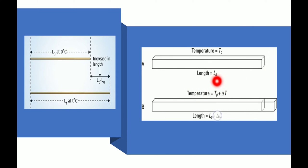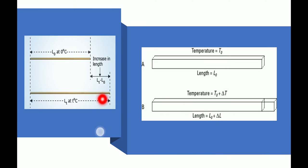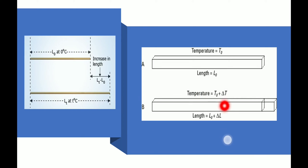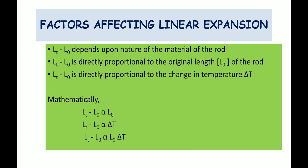In the second picture in the same slide, the initial length L₀ and initial temperature of 0°C are mentioned. On increasing the temperature, the length also increases. This change in length is denoted by ΔL — the triangle symbol represents the sign of difference, meaning L_T minus L₀ can also be written as ΔL. Similarly, the change in temperature T minus 0°C can be written as ΔT, where the delta sign means difference or change.